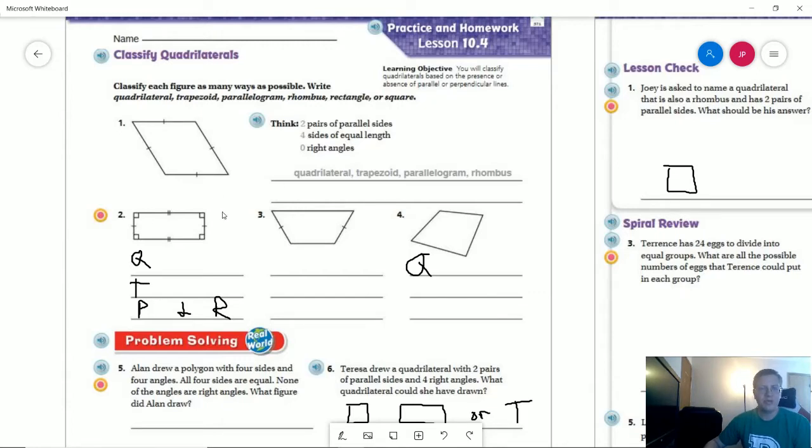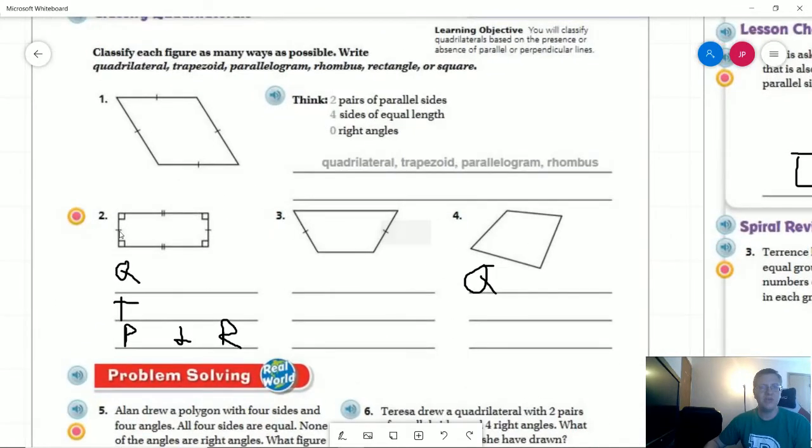Number two, we can see that we have matching sides here that are different from matching sides here, and we have four right angles. So we definitely have a rectangle, and we also are going to have a trapezoid even though that's not the normal shape we would think of.